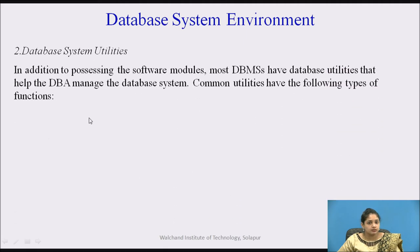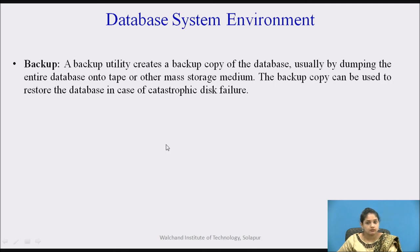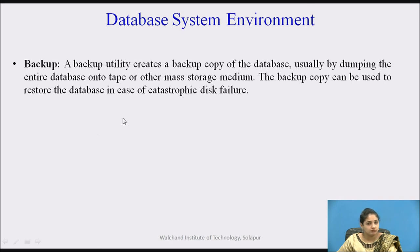Next are the database system utilities. Most DBMS systems have utilities that help manage the database. Common utility functions include: loading — used to load existing files or sequential files into the database, reformatting data to load into tables; and backup — which creates a backup copy of the database by dumping it to tape or mass storage media, used to restore the database in case of catastrophic disk failure, software failure, or hardware failure.